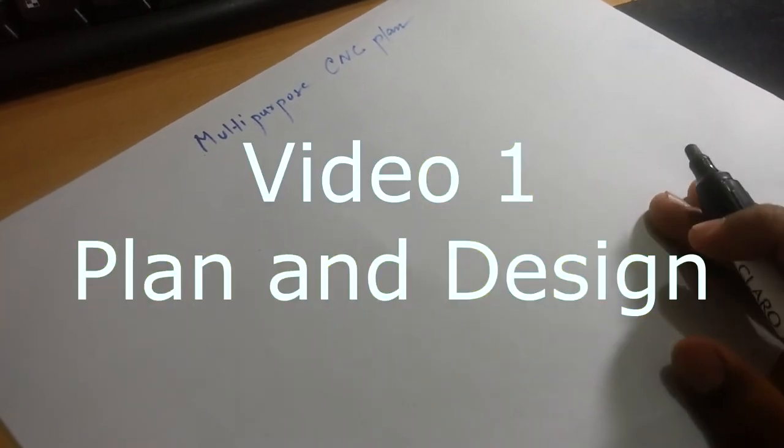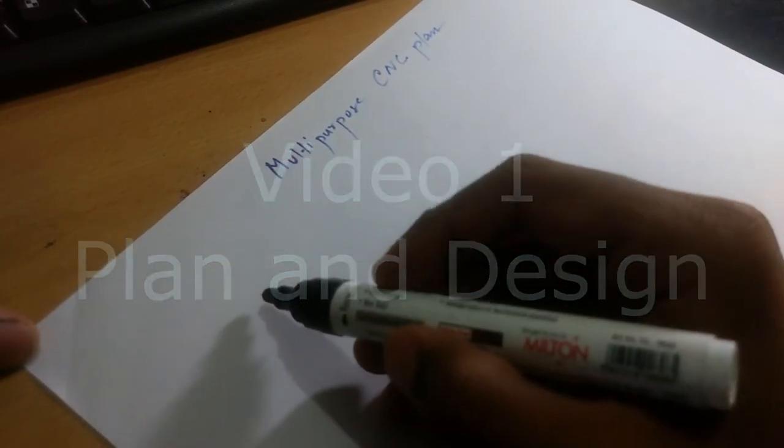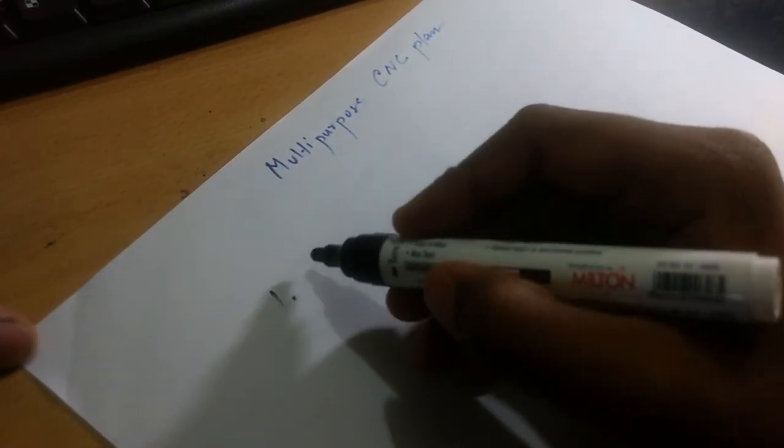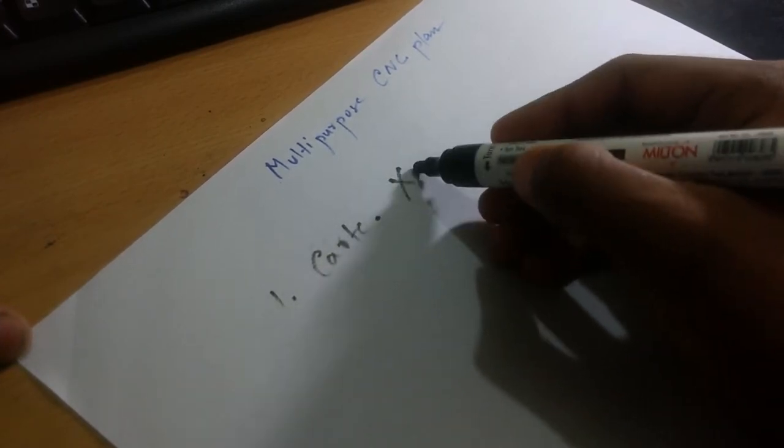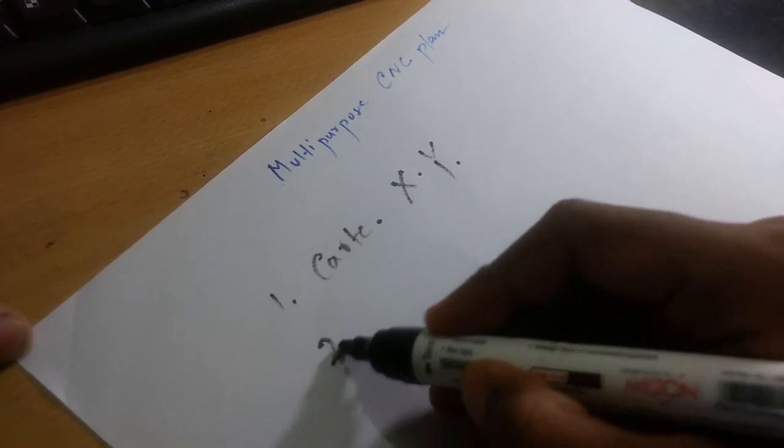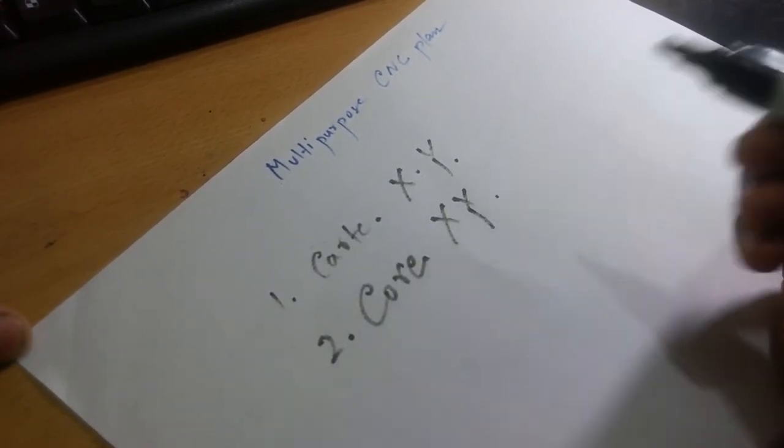So guys, now I will discuss with you the CNC plan. First of all, if I say that there are two types of CNC driving mechanisms: one is the Cartesian XY and another one is the Code XY. So in my CNC, I am using the Code XY method to drive the X and Y axis.